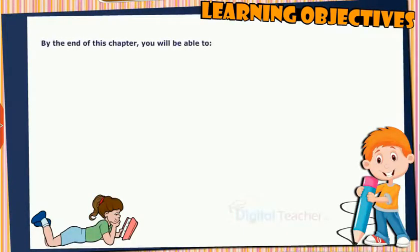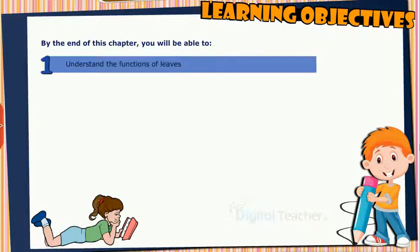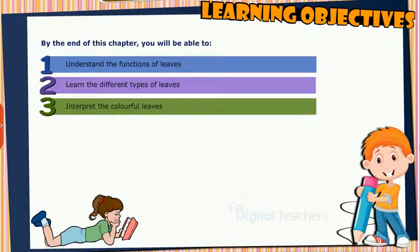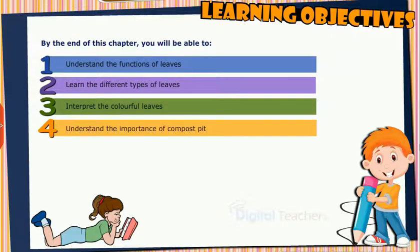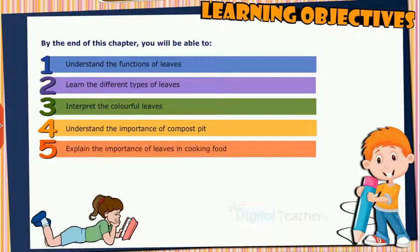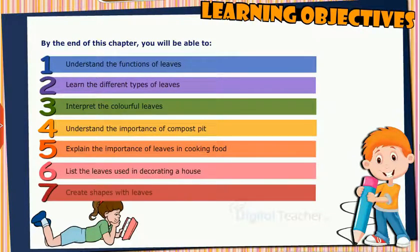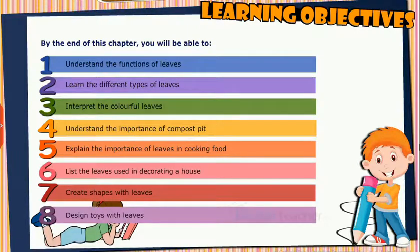By the end of this chapter, you will be able to: understand the functions of leaves, learn the different types of leaves, interpret the colorful leaves, understand the importance of compost pit, explain the importance of leaves in cooking food, list the leaves used in decorating a house, create shapes with leaves, and design toys with leaves.